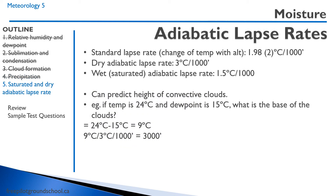We touched on this in the last lesson — the adiabatic lapse rates. It's roughly 2 degrees per 1,000 feet on average, but when it's dry it's 3 degrees per 1,000 feet, and when it's wet it's 1.5 degrees Celsius per 1,000 feet. We can predict the height of convective clouds as well as the freezing level. Here's an example: temperature is 24 degrees and dew point is 15 degrees, giving a 9-degree spread. Below the clouds it's dry, so 3 degrees per 1,000 feet — 9 divided by 3 equals 3,000 feet for the cloud base.